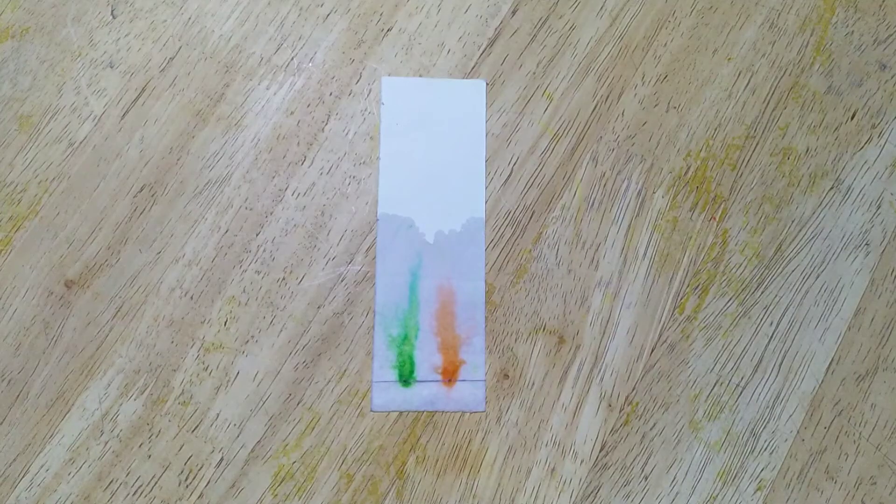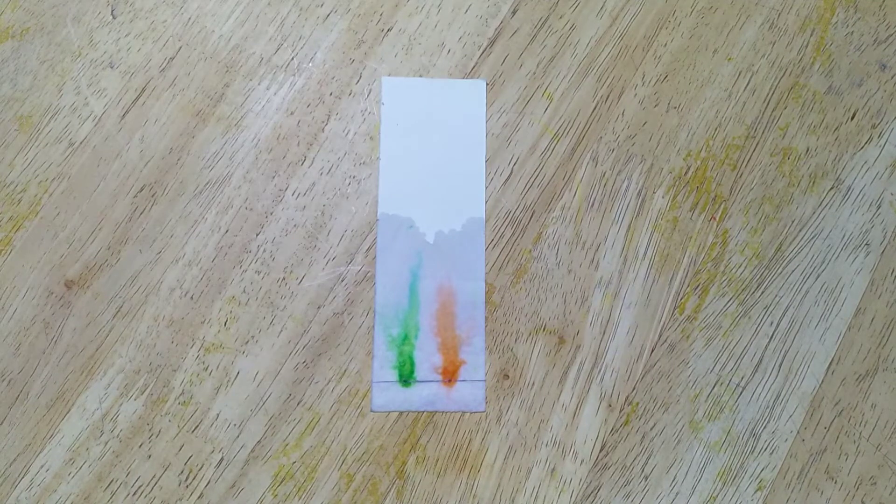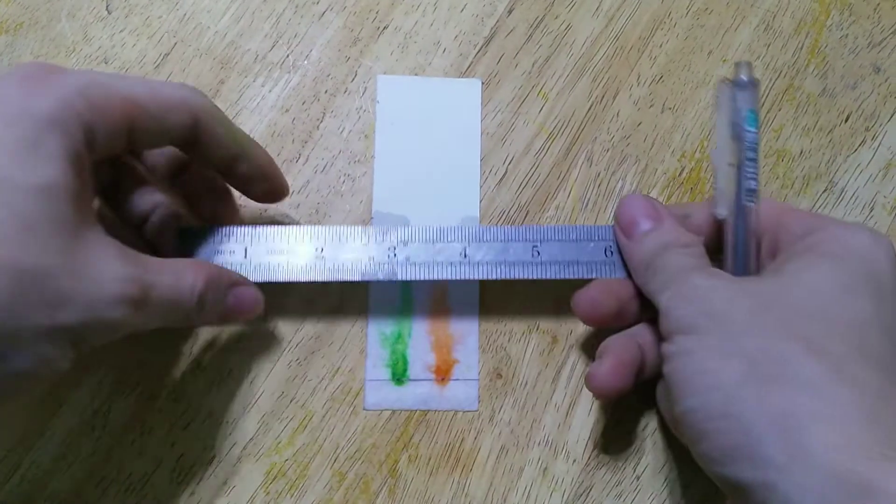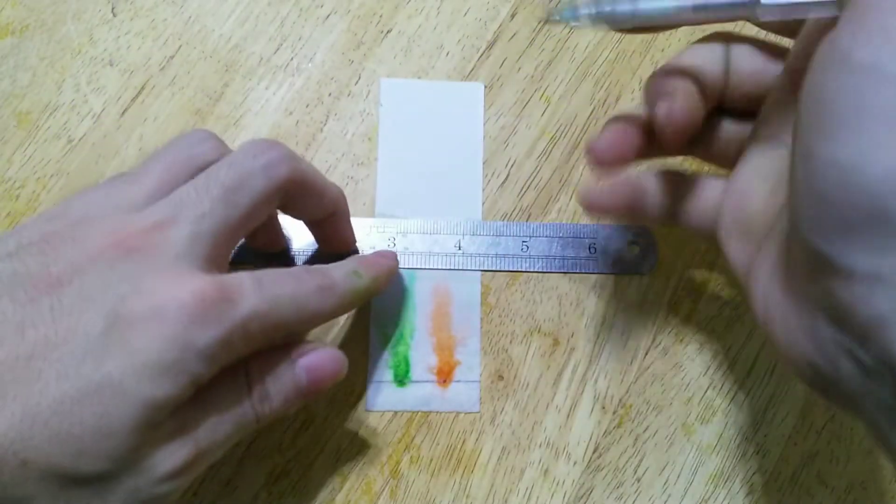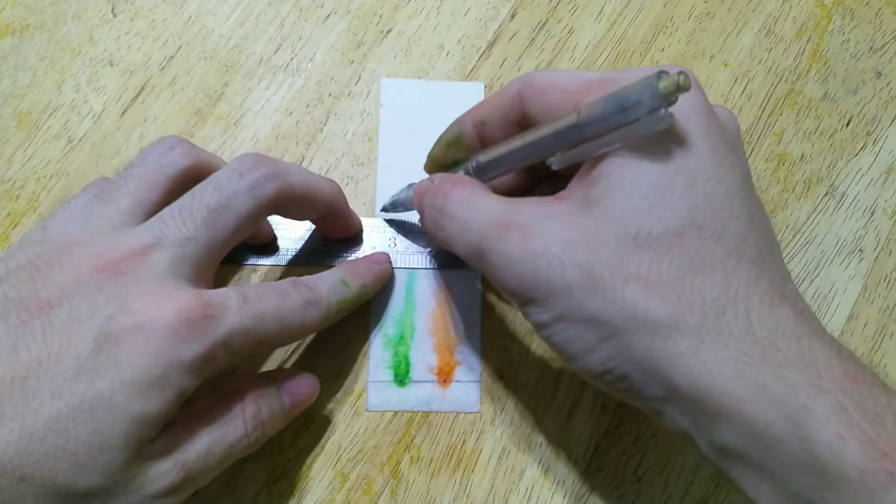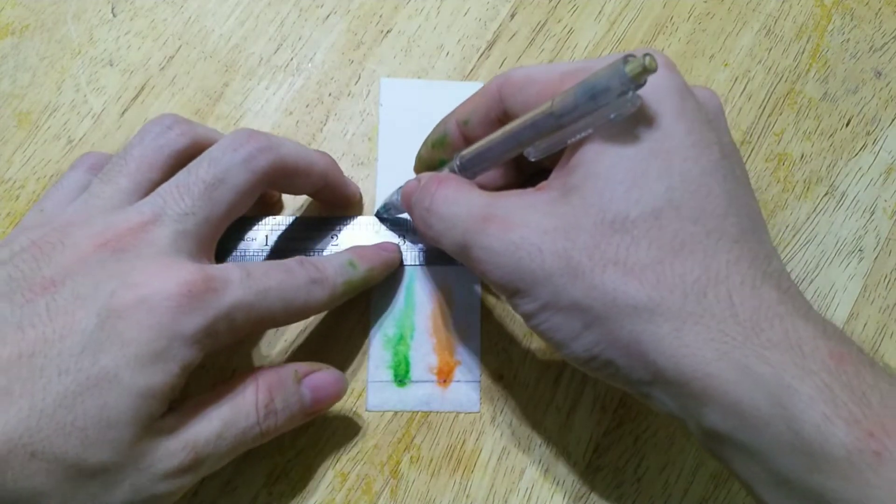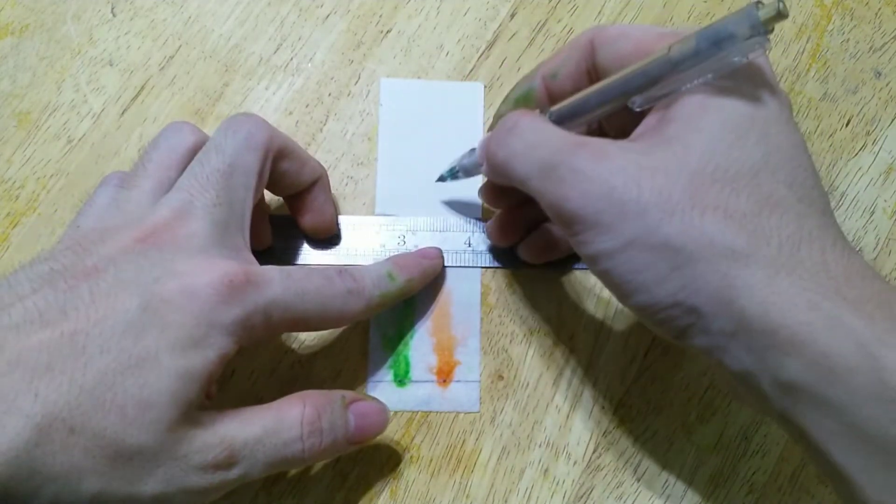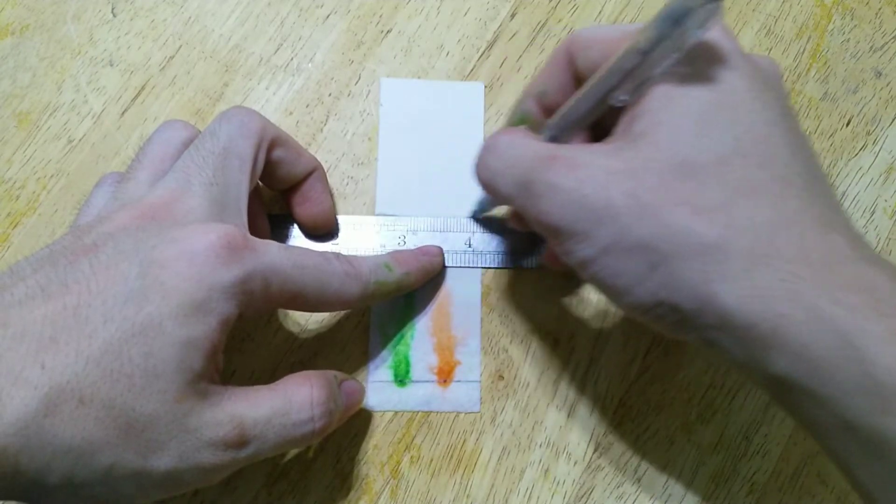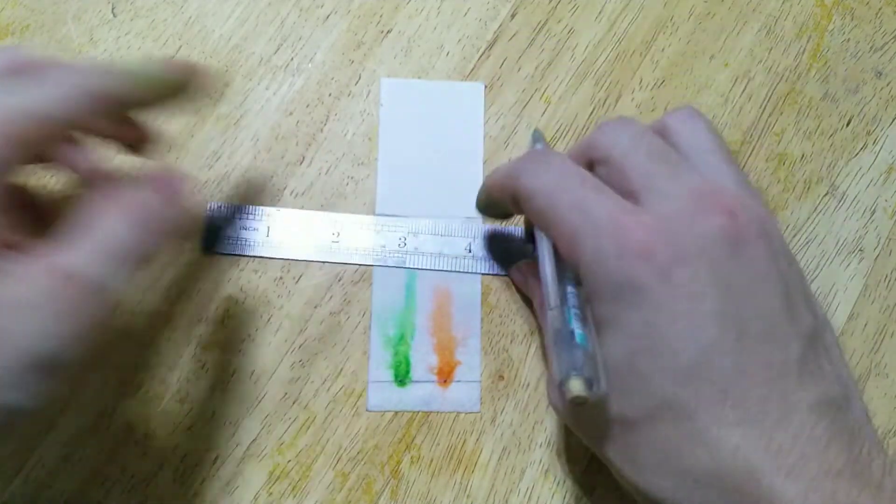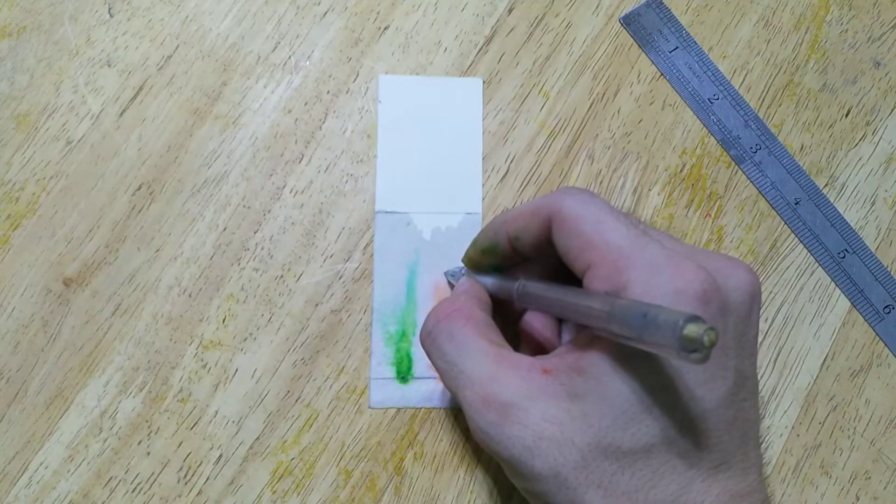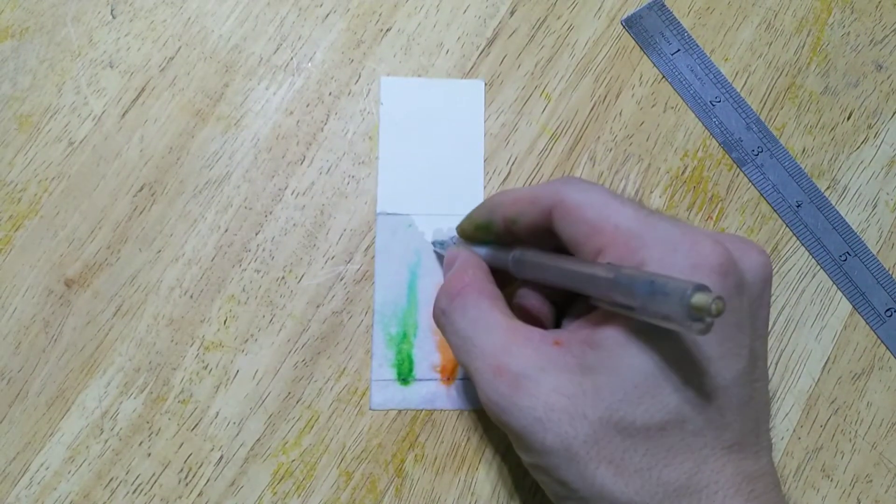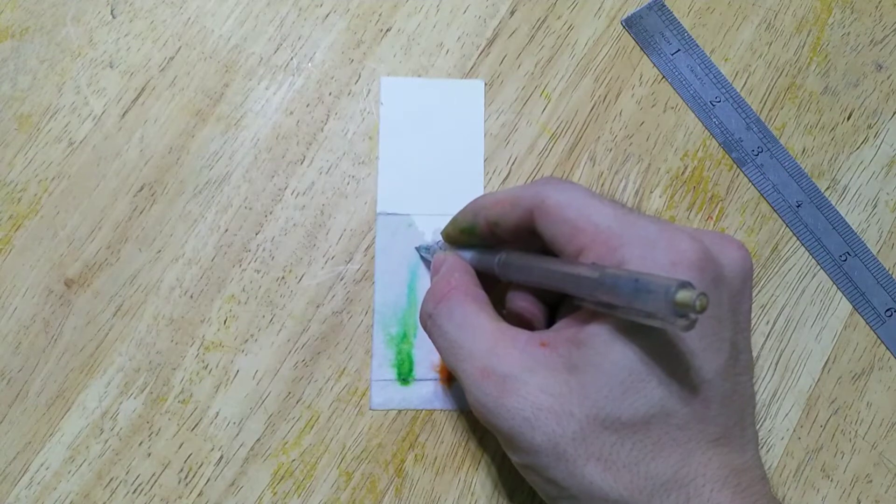After almost 8 minutes, I take out the TLC plate from the jar and immediately use the ruler and the mechanical pencil, draw a line to the mobile phase so we can observe it when it dry and mark the color for the distance traveled.